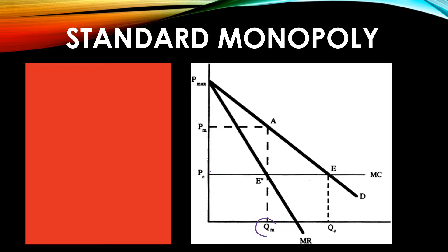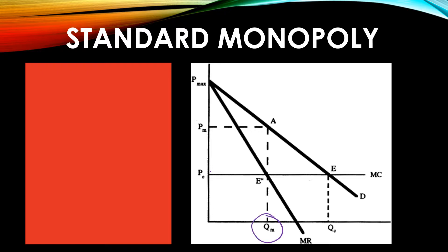You always find where marginal revenue equals marginal cost — that is our quantity, the monopoly quantity QM. Then we ask: at this quantity, how much can we charge given the willingness to pay of consumers in this market? We find that point at that quantity where it hits our demand curve. That tells us the willingness to pay, giving us the monopoly price PM.